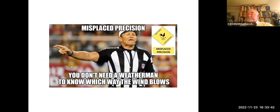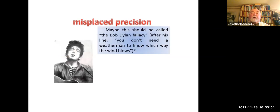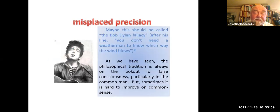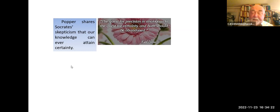Let's start with misplaced precision. You don't need a weatherman to know which way the wind blows. Like the elimination of ambiguity, too much precision isn't always a good thing — sometimes sort of. Maybe this should be called the Bob Dylan fallacy after his line, 'you don't need a weatherman to know which way the wind blows.' The philosophical tradition is always on the lookout for false consciousness, particularly in the common man, but sometimes it's hard to improve on. Robert Popper shares Socrates' view that our knowledge can never attain certainty. The quest for precision, he says, is analogous to the quest for certainty, and both will be abandoned.